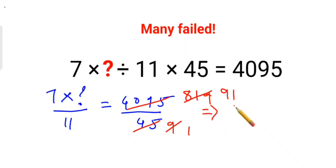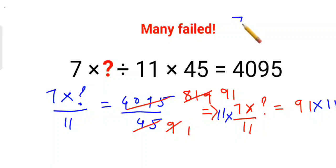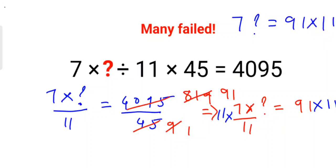So now the equation looks like: 7 into question mark upon 11 equals to 91. In order to find the value of question mark, we will multiply both sides by 11. So the statement gets simplified as 7 into question mark equals 91 into 11.